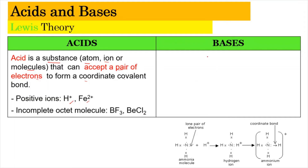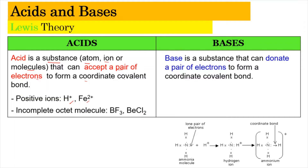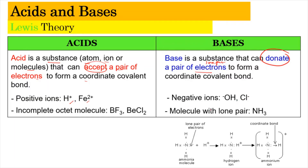Meanwhile, a Lewis base is a substance that donates a pair of electrons — for example, a lone pair. Bases include negative ions such as the hydroxide ion or Cl⁻, or molecules with a lone pair, for example, ammonia.